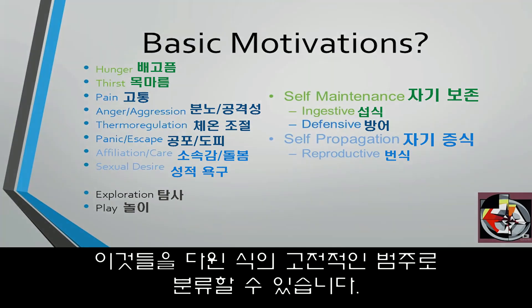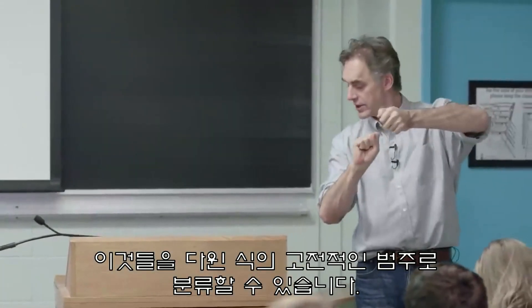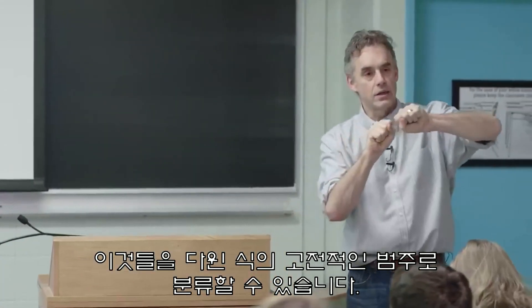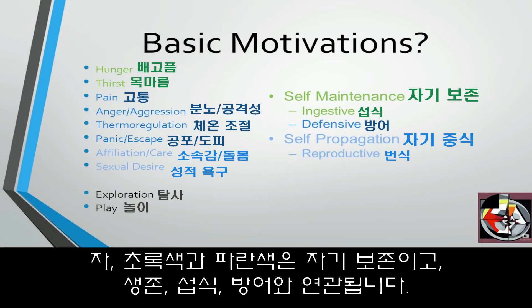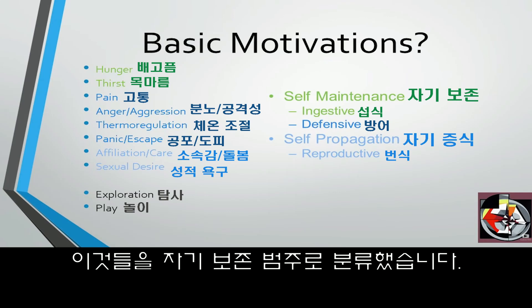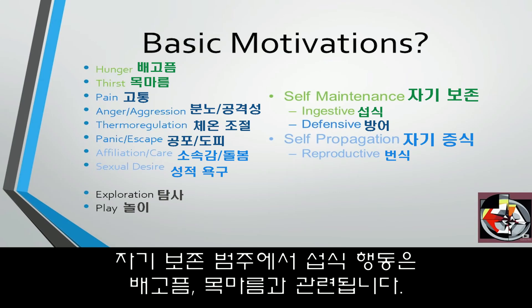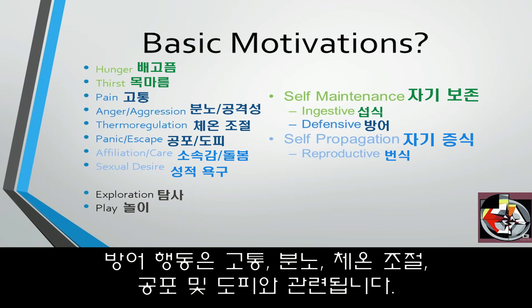You can break those into the classic Darwinian categories: there's a set of motivations that go along with self-maintenance — survival, ingestive and defensive. The ingestive set of basic motivations that go with self-maintenance would be hunger and thirst. There's a set of defensive motivations: pain, anger, thermal regulation, and panic and escape.